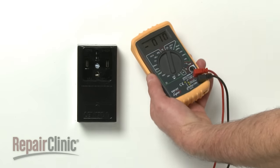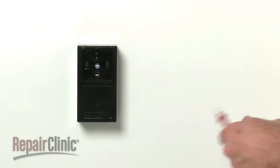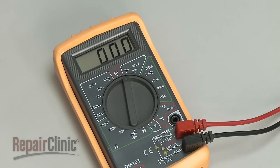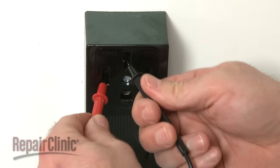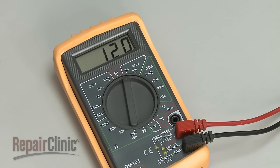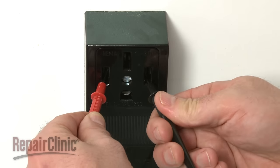If you suspect the electrical outlet is not providing sufficient voltage, you can test the outlet using a voltage meter set to volts AC. Be aware that readings can vary between 210 and 240 volts.